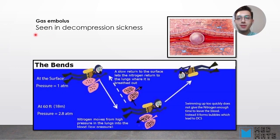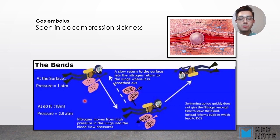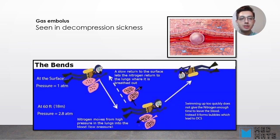The next type of embolism is gas embolism, seen in decompression sickness. This happens in divers when they move down into the water — the pressure is rising, and nitrogen moves from high pressure in the lungs into the blood, which is at low pressure. If the diver swims up very quickly, the nitrogen doesn't get time to go back to the lungs, so bubbles form in their circulation, causing gas embolism.